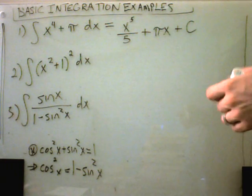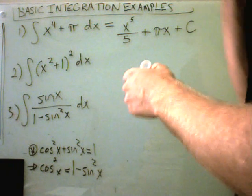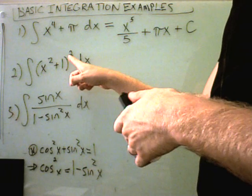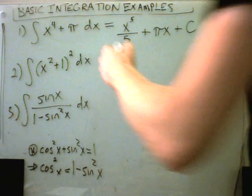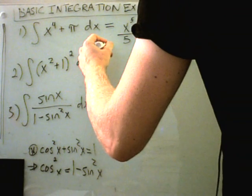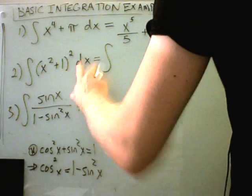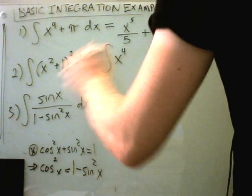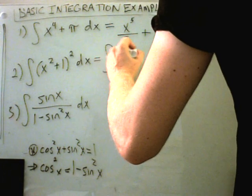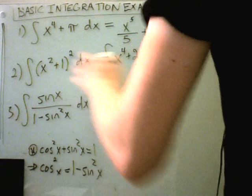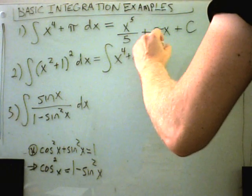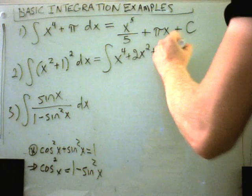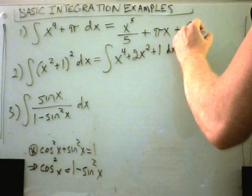The next example, you have to be a little careful. You don't want to just increase the power by one and divide by the new number. You basically are going to have to FOIL this one out first. So x squared plus one times x squared plus one. Well x squared times x squared, you'll get an x to the fourth. You'll get a plus x squared plus x squared, or plus two x squared. And then you'll get a plus one times a plus one, that'll give you a plus one. When we integrate this thing, we will get again x to the fourth will become x to the fifth over five.